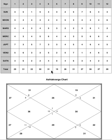Dashas are like the cake and transit is like the icing. Once you have the cake only then can you put the icing — without the cake there is no value of the icing. Therefore, first check the dashas always, and only then go to Ashtakavarga for using transits. Ashtakavarga can also be used to analyze the dashas.